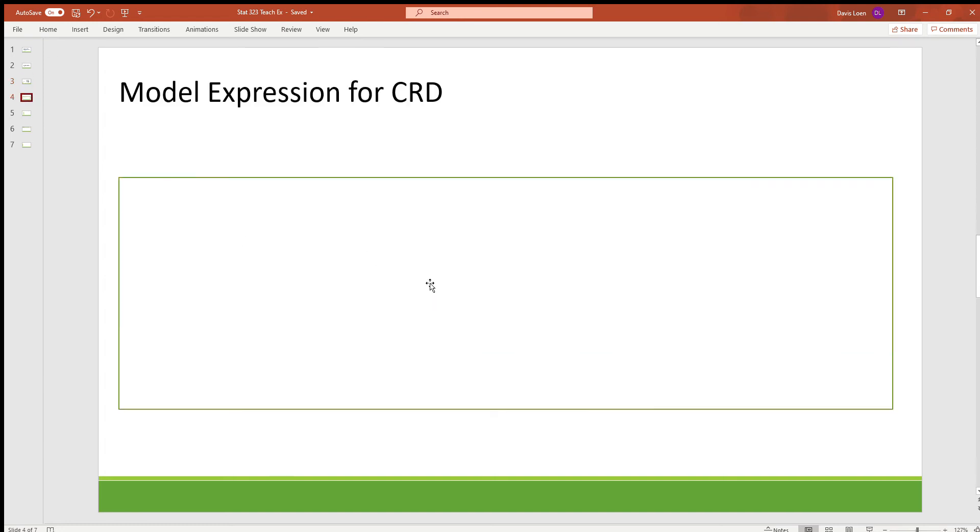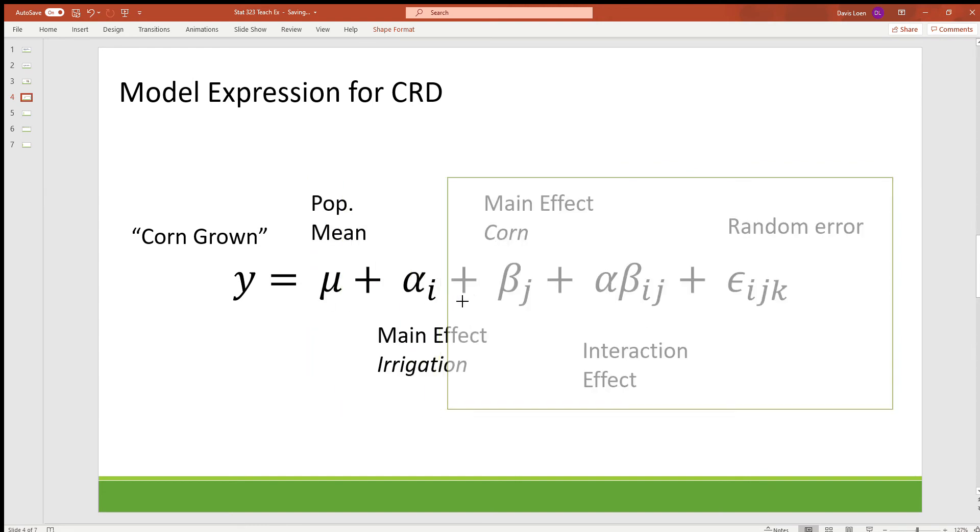So as we may have seen before, the model for this looks like the corn growth term made up of the population mean, you have a main effect which is coming from one of the three irrigation levels, the corn effect from the four corn levels, the interaction effect between corn and irrigation level, and finally the random error associated with each experimental unit.